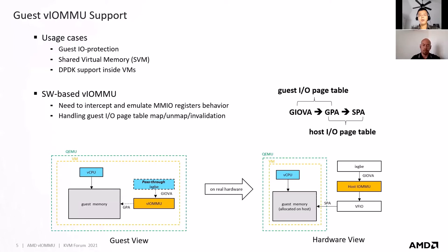The problem with this solution is that anytime the guest IOMMU page table is updated — for example, mapping, unmapping, or invalidation — you need to reconstruct the shadow table. Because of that, this can cause performance overhead.